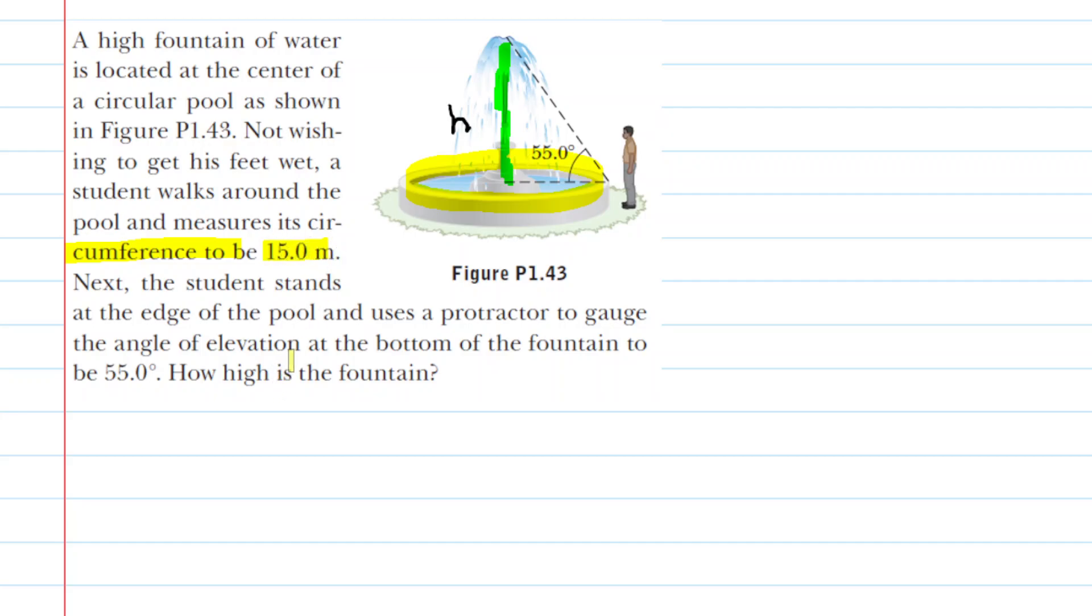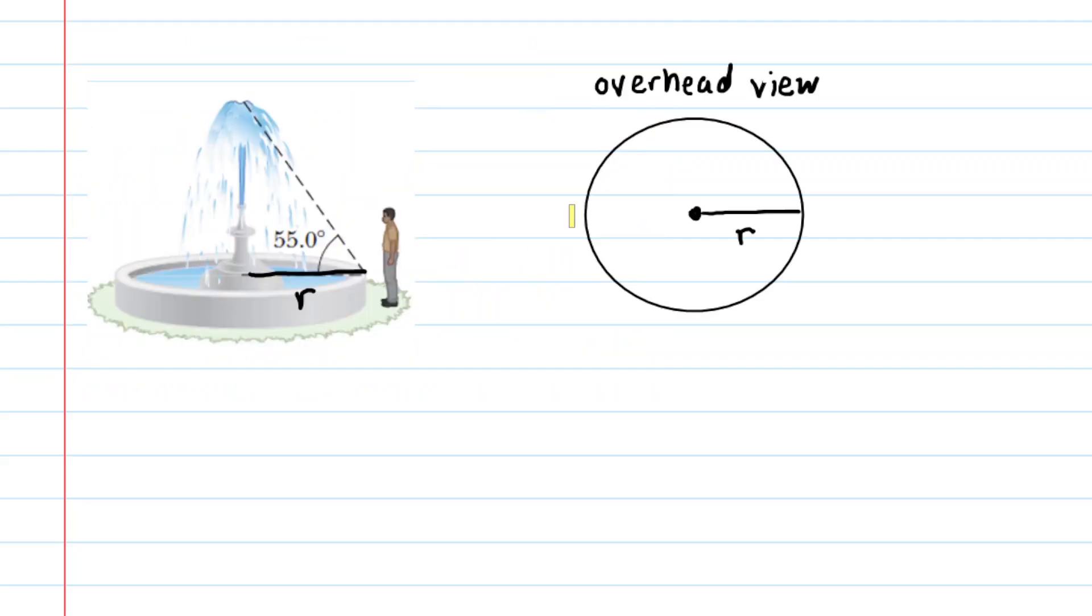Let's take a look at why that would be important in solving for the height. So you can kind of imagine that you're standing up here, or floating up here perhaps, and you're looking down on the fountain, and again this student walked around the entire circumference of the fountain, which is circular in shape.